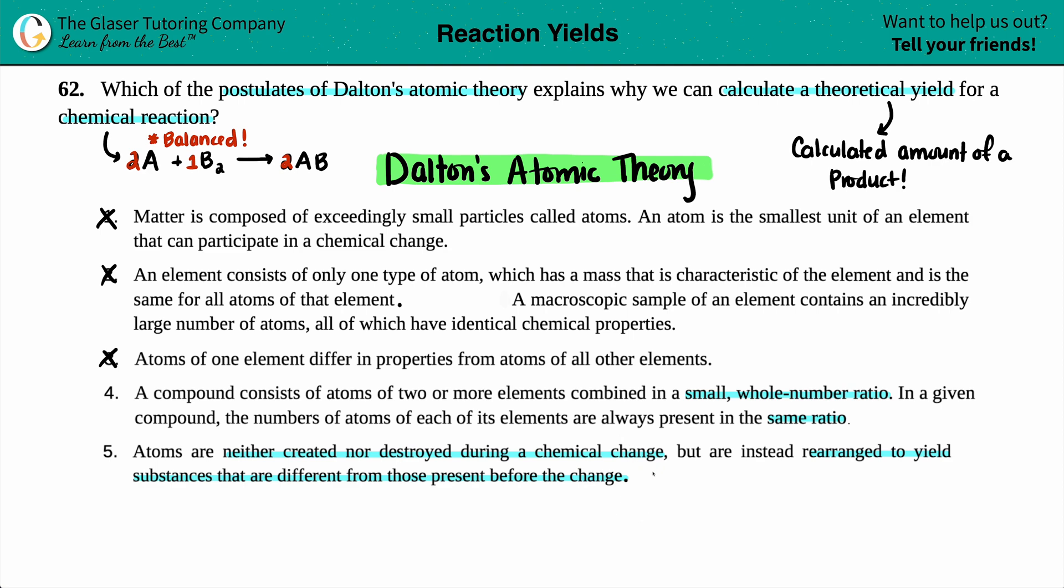This is literally talking about a balanced equation. They're literally spelling it out for you of what happens during a balanced equation. Nothing can be created nor destroyed. Everything is just transferred. That's why if you have an A and you got two of them, you have to have two A's on the other side.